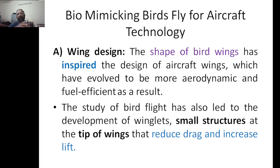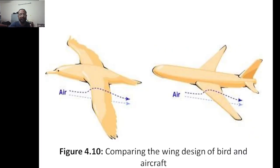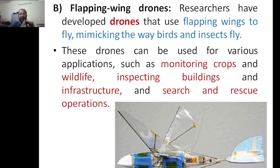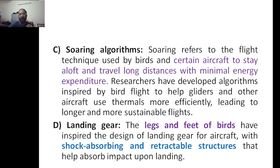Looking at wing design, we are copying the same wing structure from birds and using it in aircraft. Researchers have also developed flap-wing drones that mimic the way birds and insects fly. These can be used for monitoring crops, wildlife, inspecting buildings and infrastructure, and search and rescue operations.